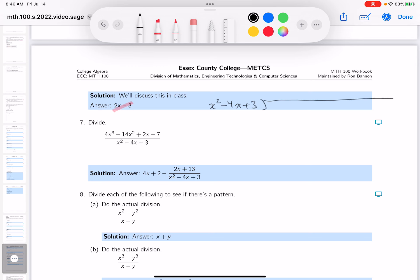The dividend, well, that's 4x cubed, and then it's minus 14x squared, then it's 2x, and then it's minus 7.